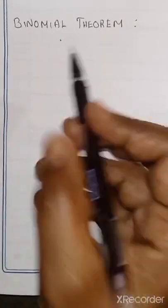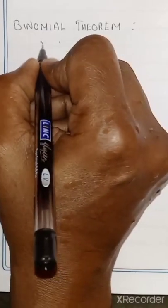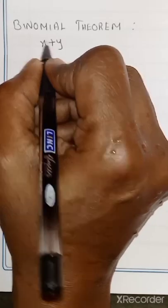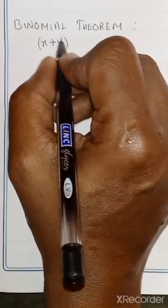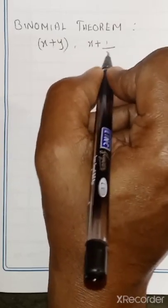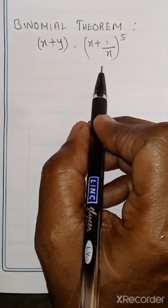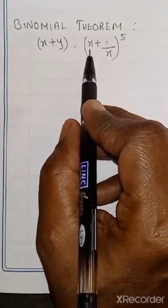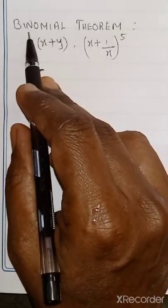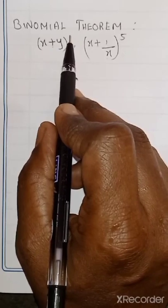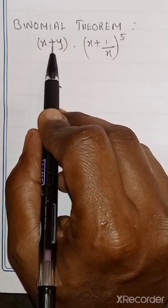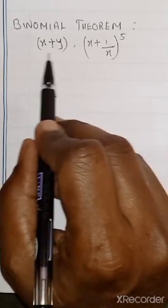For example, X plus Y is a binomial — X is one term, Y is one term, combined by addition. It may also be X plus 1 by X, the whole power 5 — X is one variable, 1 by X is one variable. Binomial: an algebraic expression of sum or difference of two terms is called a binomial.